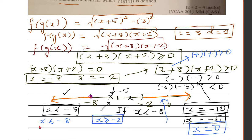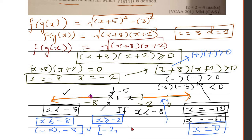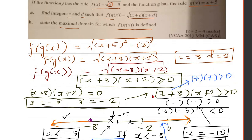So the maximal domain in interval notation is from negative infinity to -8 (including -8), union with -2 to positive infinity (including -2). That's how you solve this without a calculator, though this question can also be done on a CAS calculator.